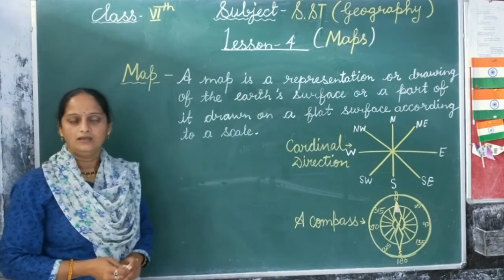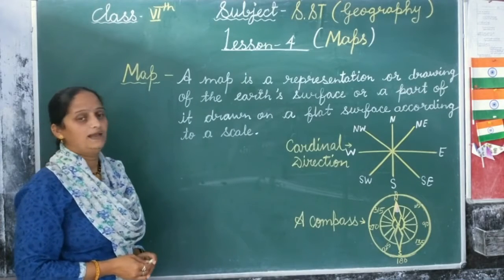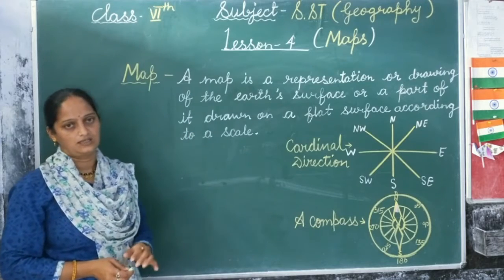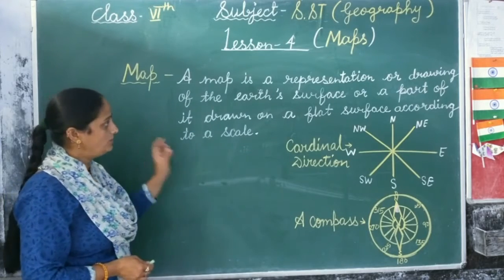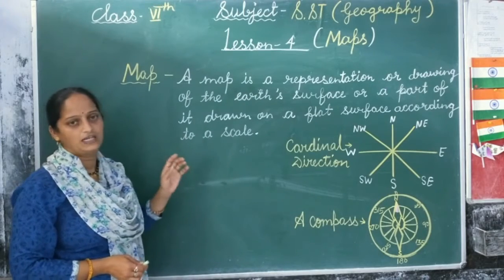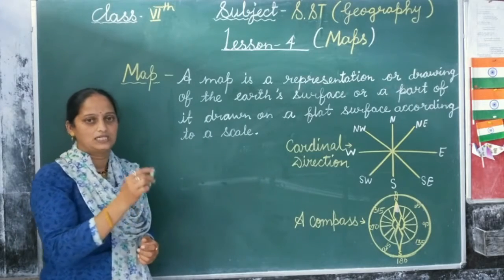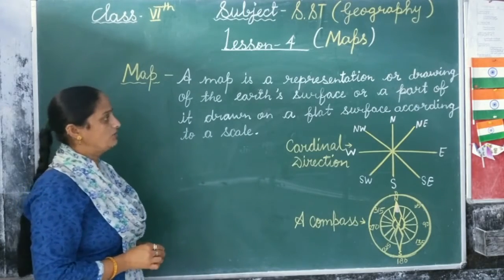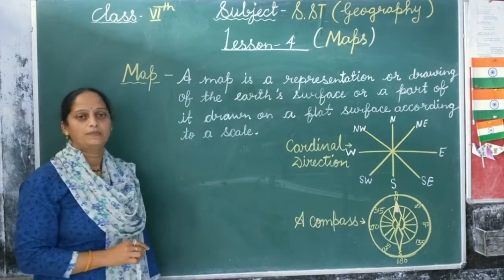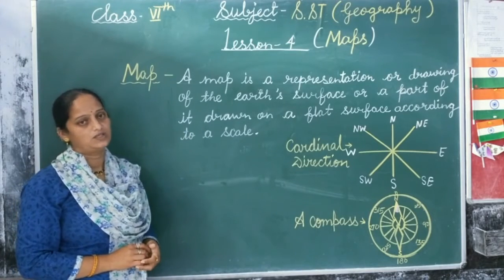हमने 2nd chapter में globe के बारे में पढ़ा था। Globe हमारे लिए helpful होता है जब हम पूरी earth की study करते हैं। लेकिन जब हमें earth के किसी एक part — जैसे किसी country, district, या state — के बारे में जानना हो, तो उस condition में globe उतना helpful नहीं होता जितना कि map होता। उस condition में हम map का use करते हैं।